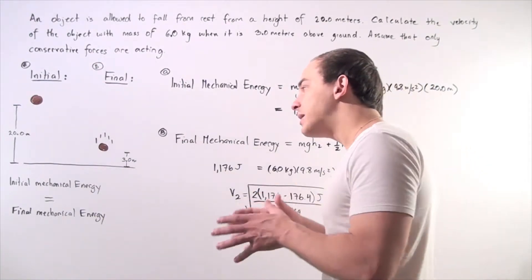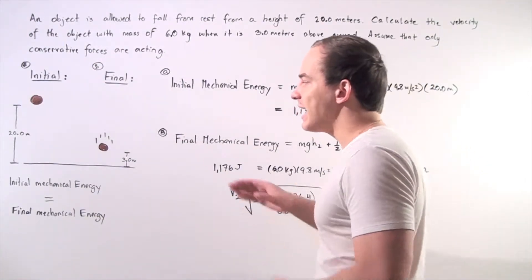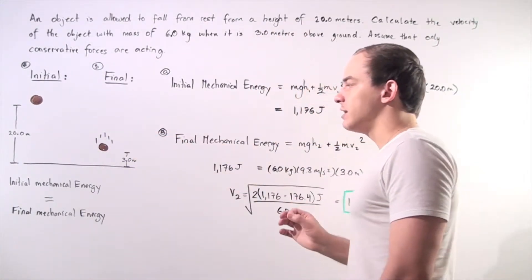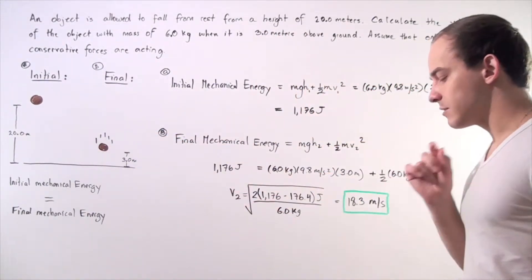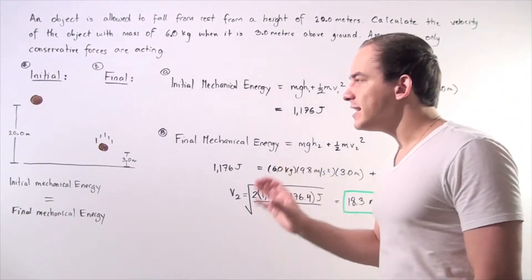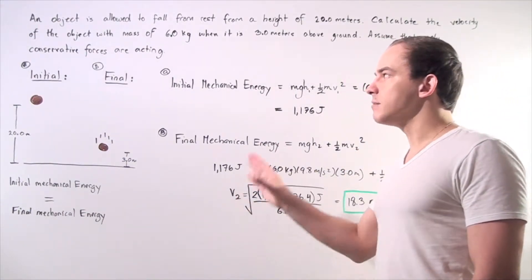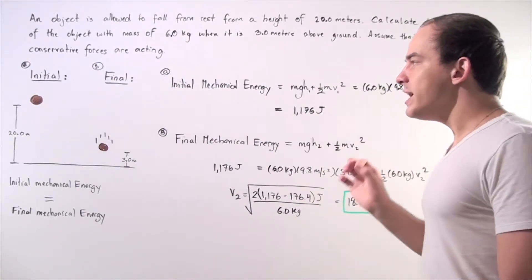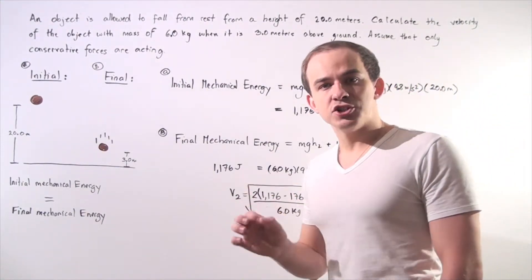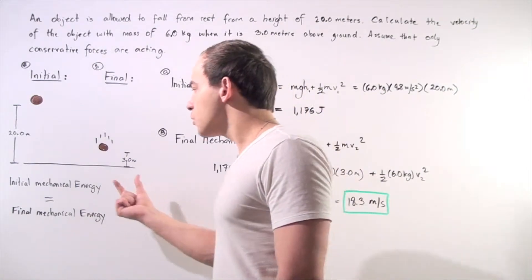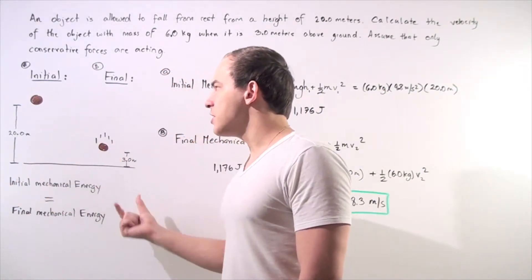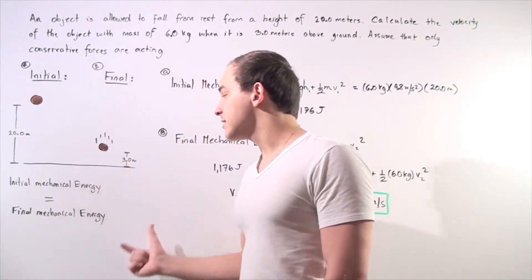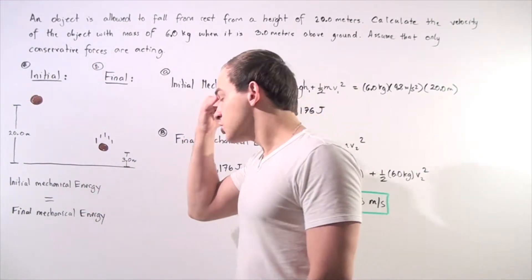Now if we calculate how much kinetic energy our object has at the final position, we can use that to calculate the velocity of the object. Because we are dealing with a conservative system, only conservative forces are acting on our object, we can use the conservation of mechanical energy. So the initial mechanical energy of the object is equal to the final mechanical energy of that object.